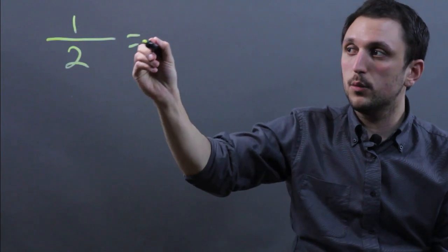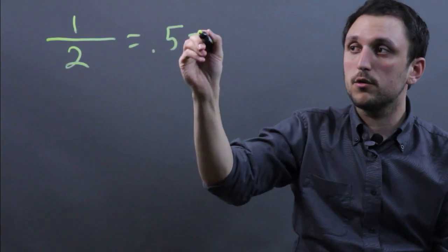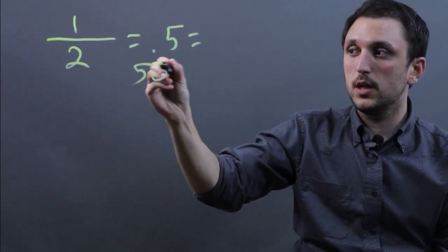Now 1 half equals 0.5, so probability can be expressed as a decimal. It can also be expressed as a percentage, 50%.